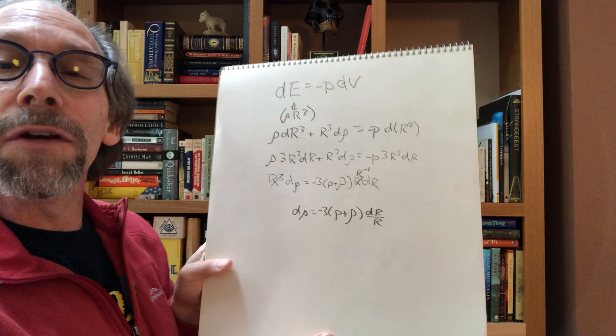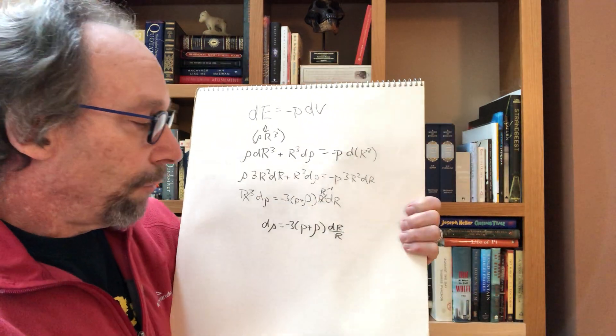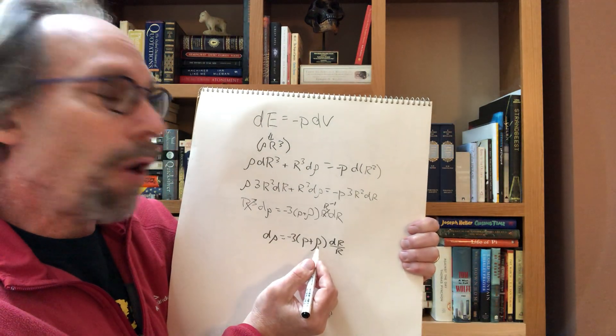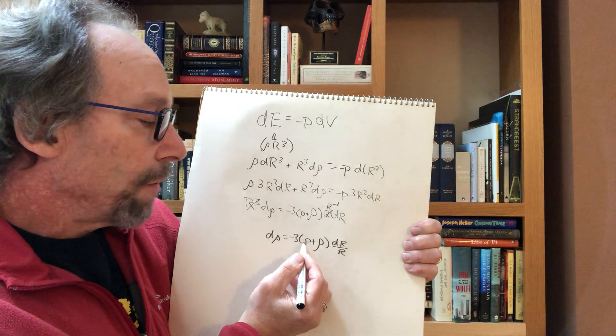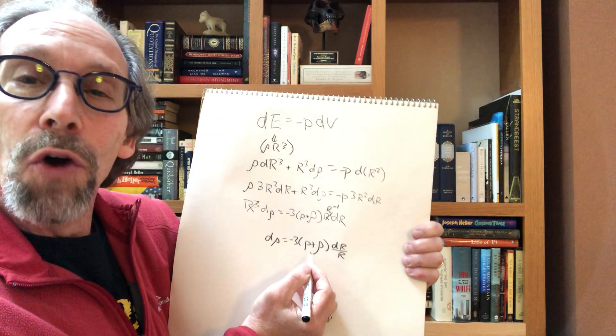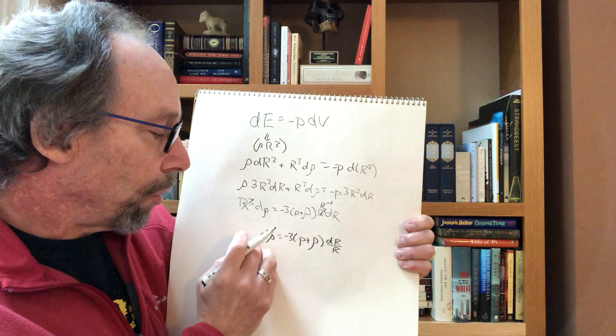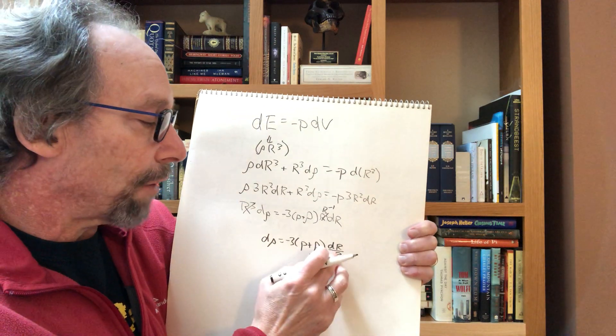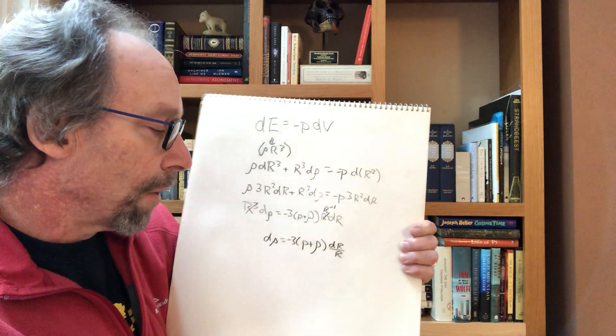Now, this is a differential equation. To solve it very simply, we just have to know what the relationship between p and rho is. This is what's called the equation of state. When you know the equation of state of a substance, you can determine the amount by which the energy changes as the size of the substance changes.